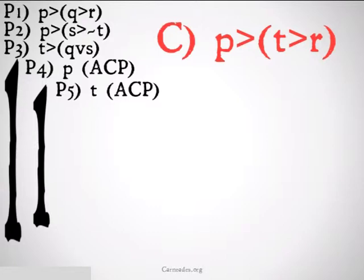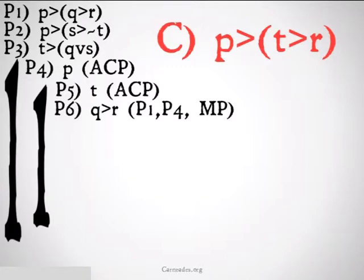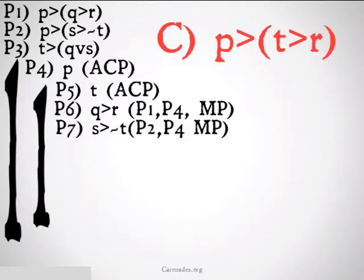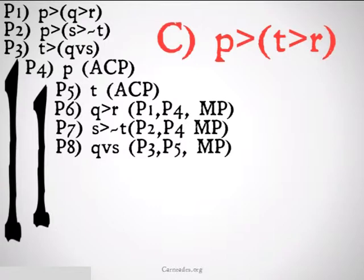Next, what we're going to do is do a bunch of modus ponens on the first three premises to get those conclusions, because we have P and T. We can get Q implies R from one four modus ponens. We can get S implies not T from two four modus ponens, and we can get Q or S from three five modus ponens.